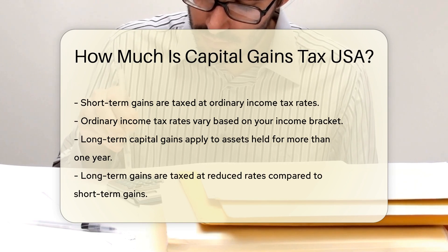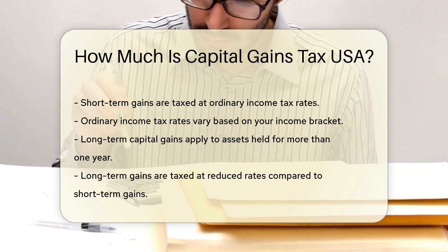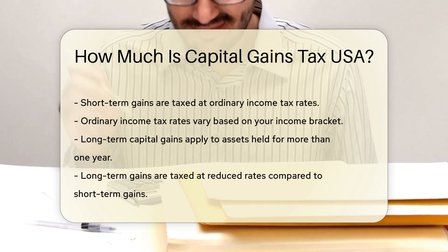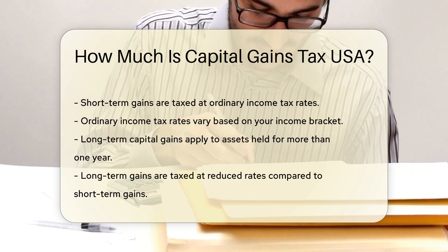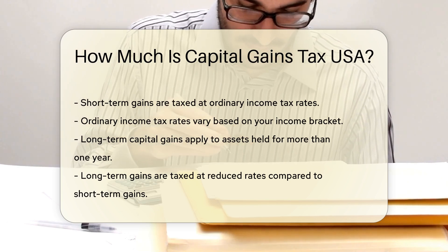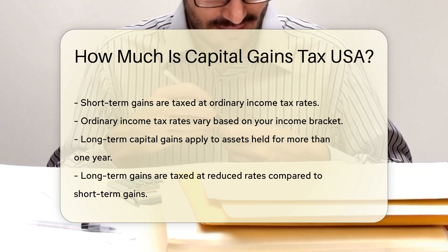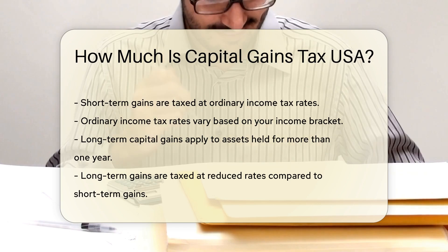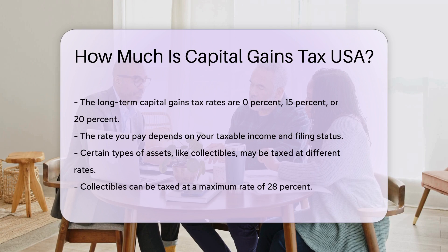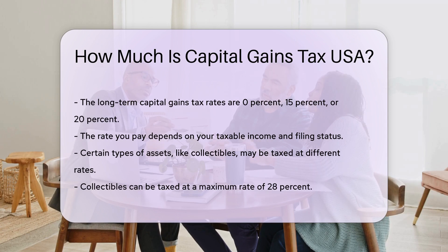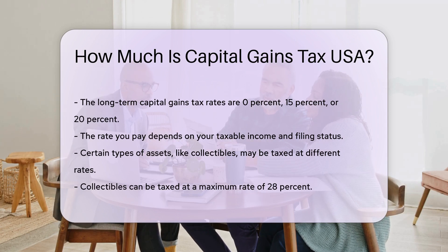The long-term capital gains tax rates are 0%, 15%, or 20%. The rate you pay depends on your taxable income and filing status. For example, if your taxable income is below a certain threshold, you may qualify for the 0% rate. Higher income levels are subject to the 15% or 20% rates.